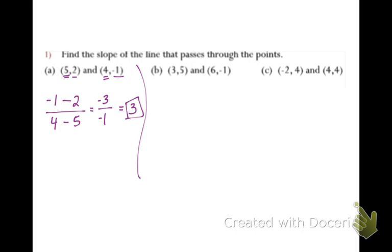For b, we have y2, which is negative 1, minus y1, which is 5, all over x2 minus x1. Negative 1 minus 5 is negative 6, and 6 minus 3 is 3. Our final answer — if we divide that out, we get negative 2 as our slope.